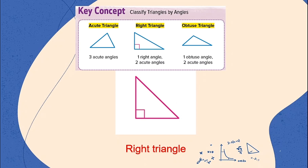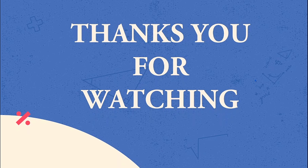These are the three classifications of triangles according to its angles: we have acute triangle, right triangle, and obtuse triangle. And that concludes our lesson for today. If you have questions or clarifications, feel free to write them in the comment section below, and I will try my best to answer all your concerns. Thank you for watching. Once again, this is your teacher JC, signing off.